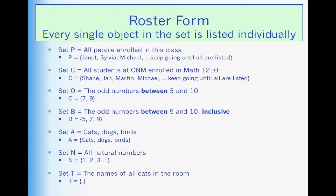Let's look at examples of each of those kinds of set descriptions. First of all, let's go into a little bit more detail on roster form. If set P is all the people enrolled in this class, then I would just simply list out each and every name of the people in this class. If I wanted the set of all students at CNM who are enrolled in any Math 1210 class, then I would sit down and I would list out all those names. And that would probably be a pretty long list.